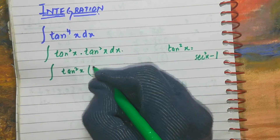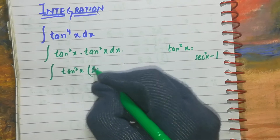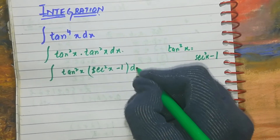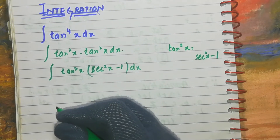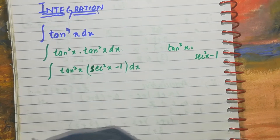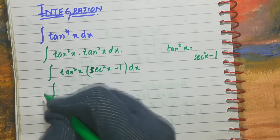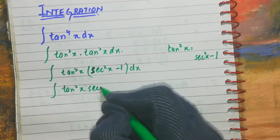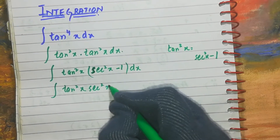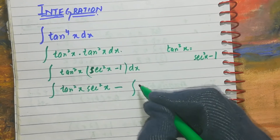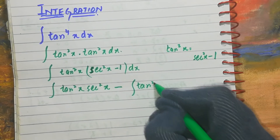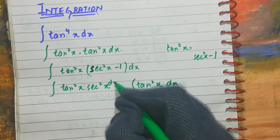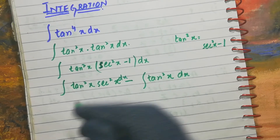Put in the value of tan²x, so we get tan²x · (sec²x − 1) dx. Now multiply tan²x into (sec²x − 1), giving tan²x · sec²x − tan²x. We then split the integration sign over both terms and write dx on both sides.